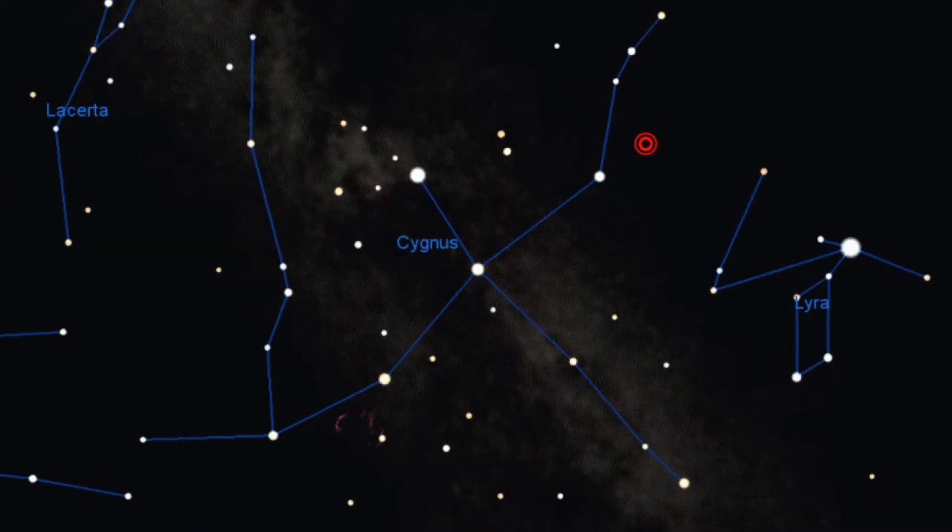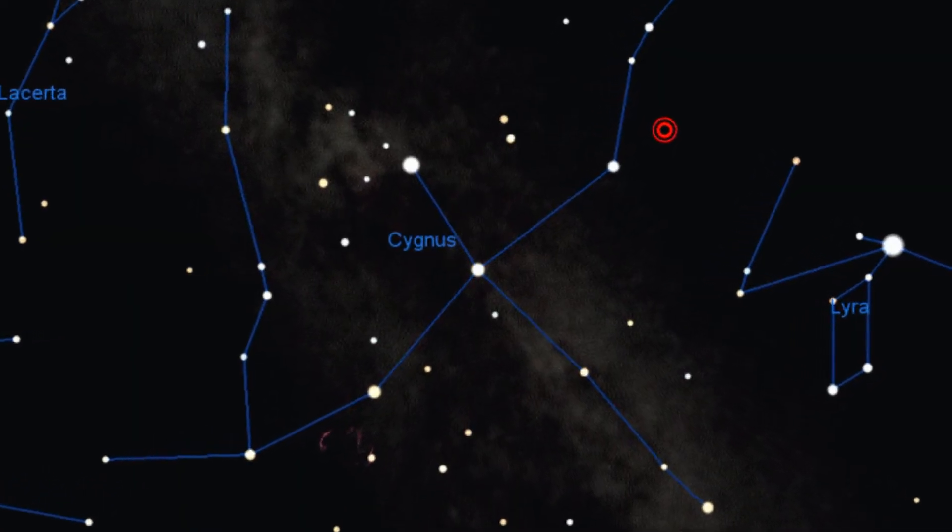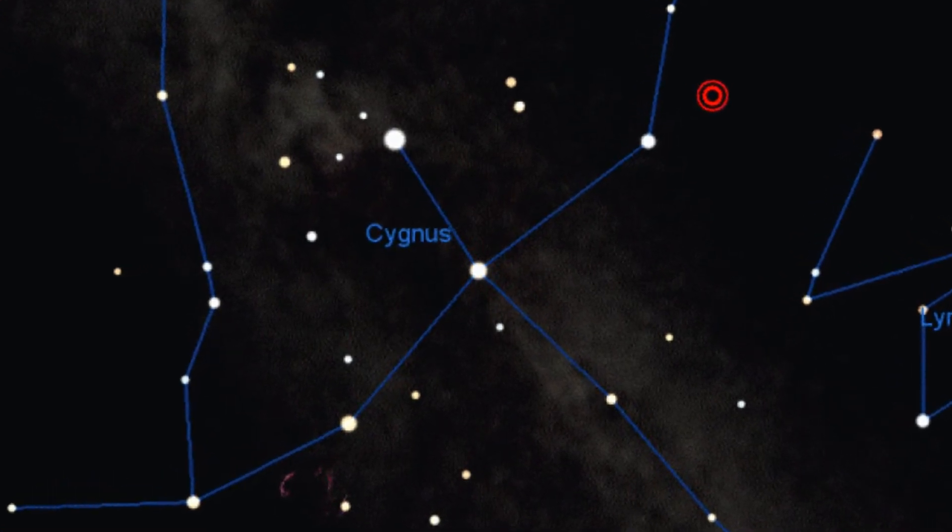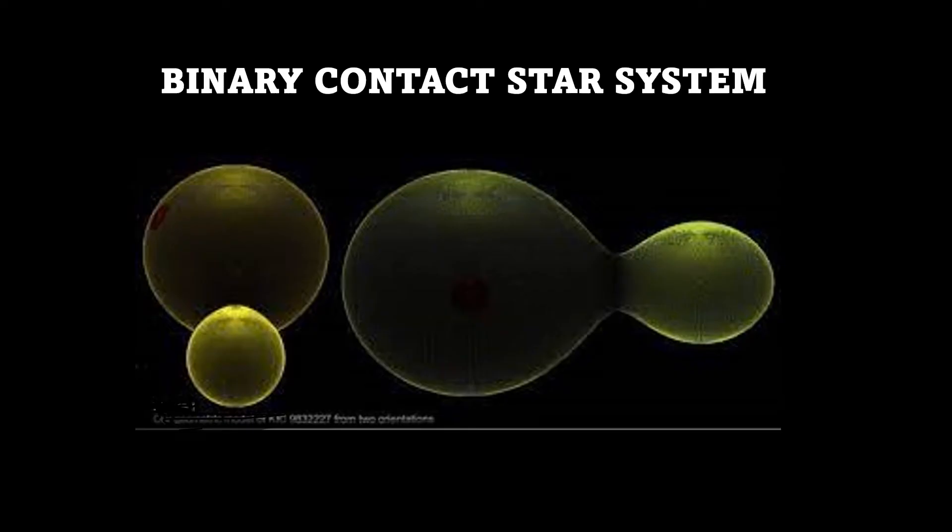In the Cygnus constellation is the KIC-9832227 star which comprises of two stars of different sizes in contact. This star is brighter than our Sun. A binary contact star system is not a rare one but an uncommon one.